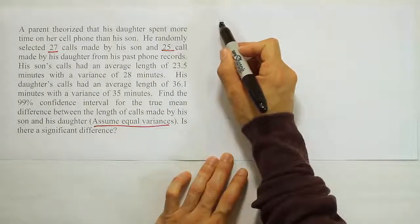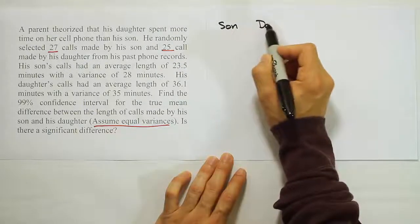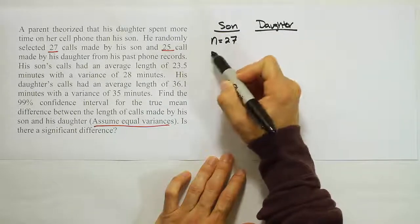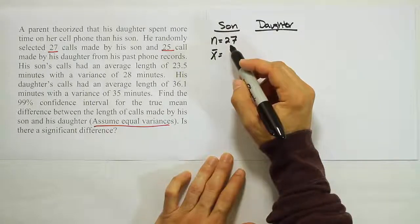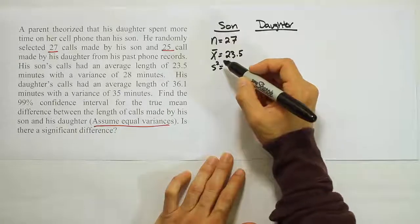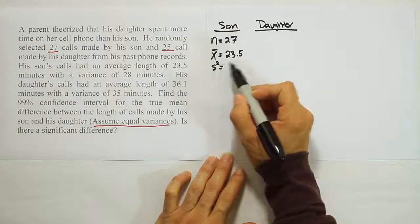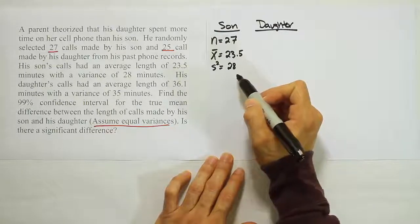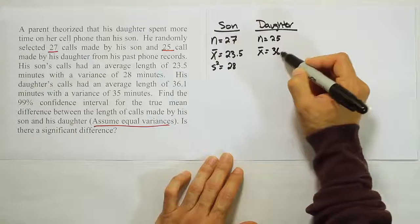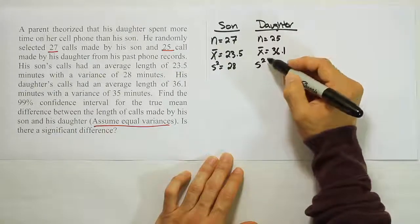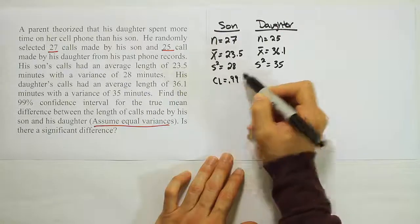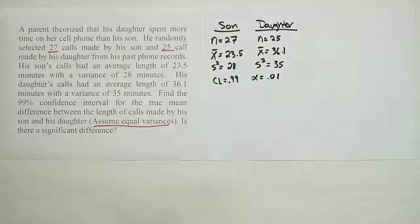For the son, we have a sample size n₁ = 27, a sample mean x̄₁ = 23.5 minutes, and a variance s₁² = 28. For the daughter, we have n₂ = 25, a sample mean x̄₂ = 36.1 minutes, and a variance s₂² = 35. The confidence level is 0.99, which makes alpha = 0.01.